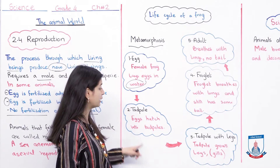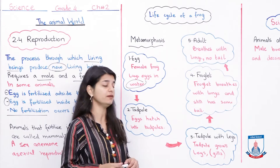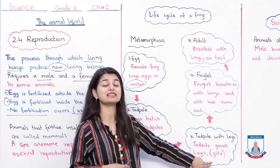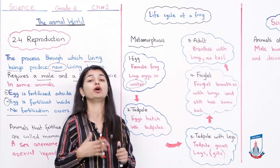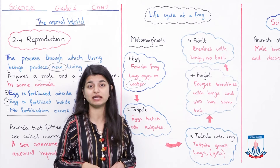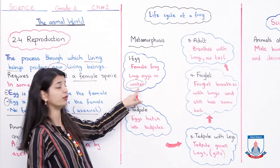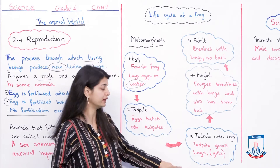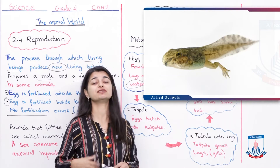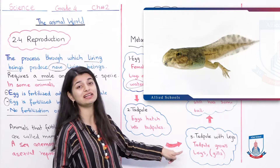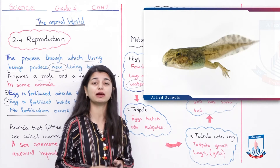The third stage is that the tadpole develops legs. The tadpole initially only has a tail, but now it grows legs. It breathes using gills, which are the breathing organs of water animals. So the tadpole is born in the water and breathes through gills. In this stage you can see both front and back legs developing on the tadpole.